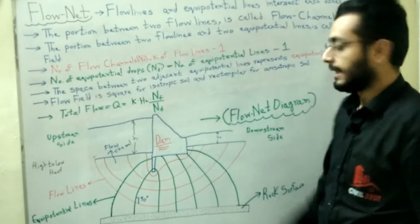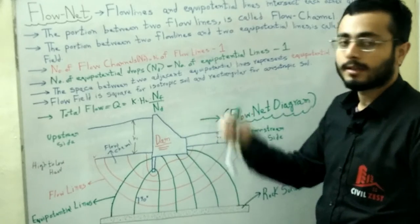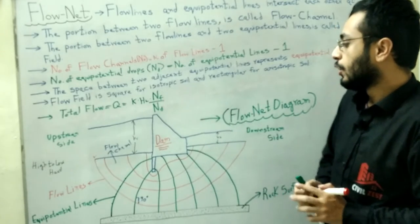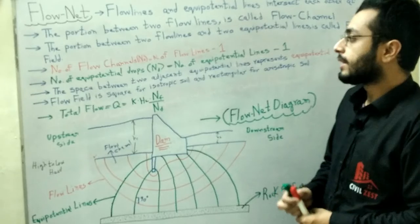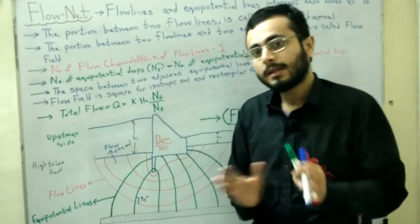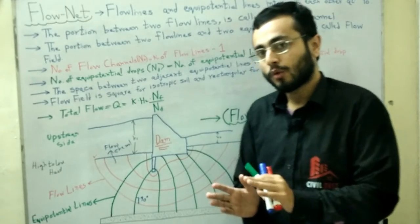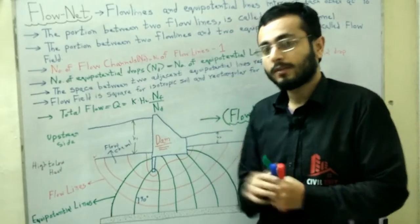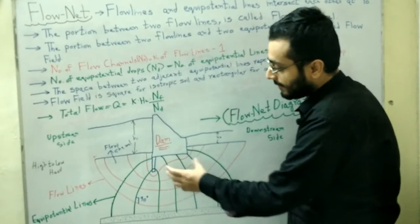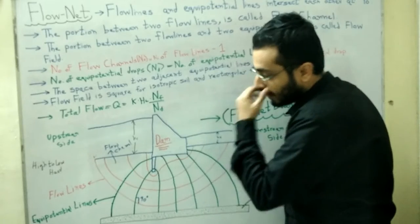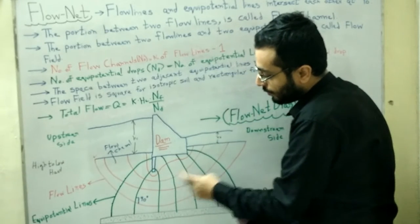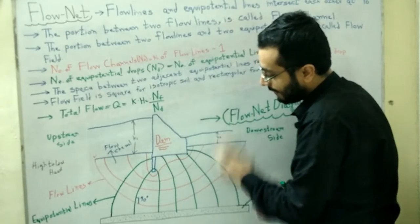So including the four intermediate red lines, the blue top layer line, and the rock surface line, we count one, two, three, four, five, six flow lines total in this flow net diagram. Similarly for equipotential lines, we count the visible green lines: one, two, three, four, five, six, seven.